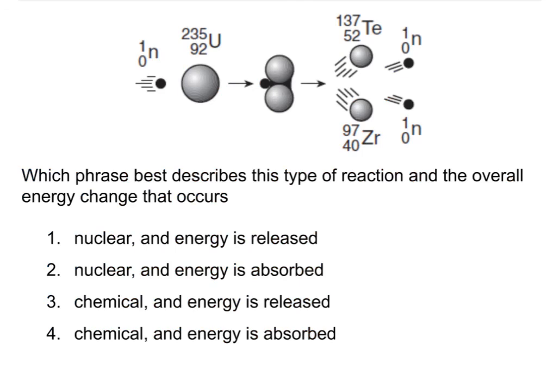Okay, some practice questions. Which phrase best describes this type of reaction and the overall energy change that occurs? The picture here is clearly a fission reaction — so it's a nuclear reaction and energy is released. This also shows that uranium-235 doesn't always split into barium and krypton; here it splits into tellurium and zirconium with two neutrons produced. But it is still a split of a bigger atom into smaller ones — so it is fission, a nuclear reaction, and energy is released.